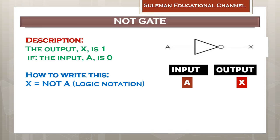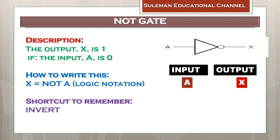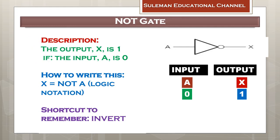We can remember this with the shortcut key: inverse. If the value of input A is zero, then the output value of X will be one. If the value of input A is one, then the output value of X will be zero. In easy words, the output will be the invert of the input — if input is zero then output will be one, and if input is one then output will be zero.